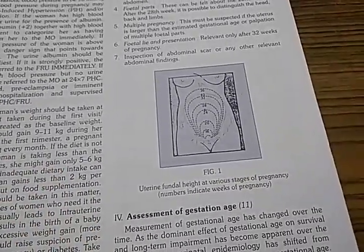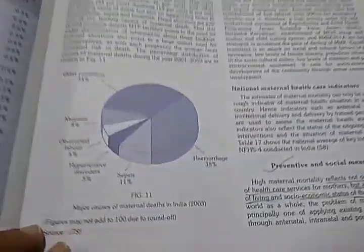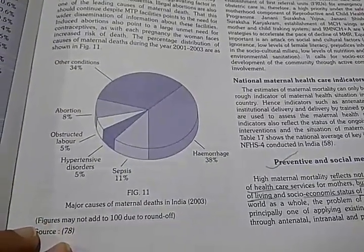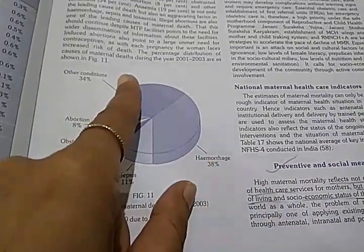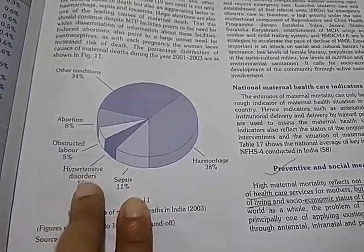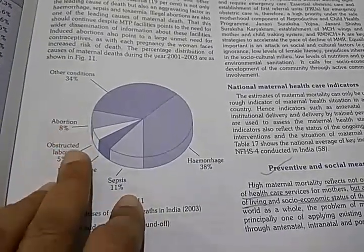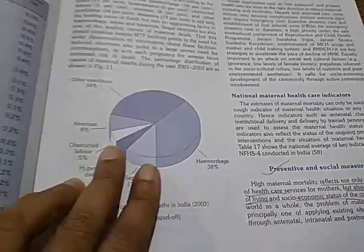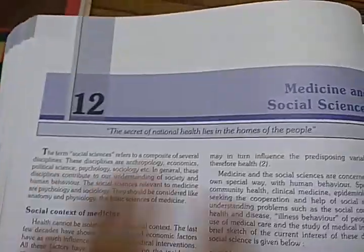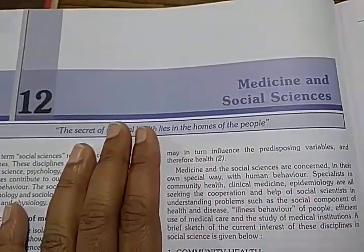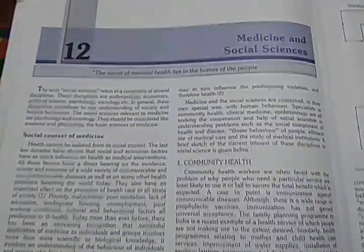There is uterine fundal height at various stages of pregnancy — finally a clinical image! Major causes of maternal deaths in India: hemorrhage is the leading cause, followed by sepsis, hypertensive disorders, obstructed labor, and abortion — abortion accounts for about eight percent of deaths.